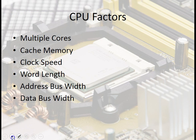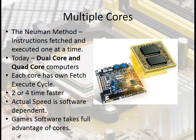First of all, we've got multiple cores. In the Von Neumann method, instructions are normally fetched and executed one at a time. Modern computers utilize the Von Neumann method, however today we now have dual core and quad core computers, and each core has its own fetch and execute cycle.